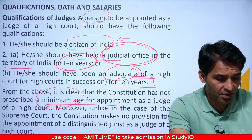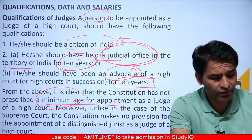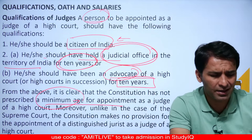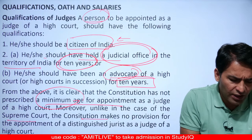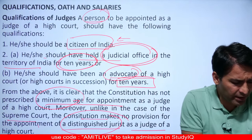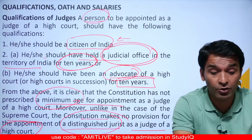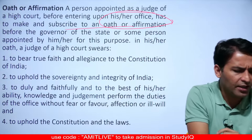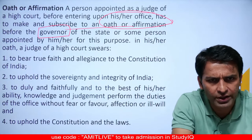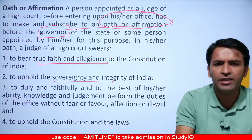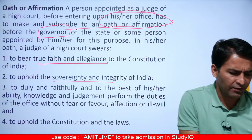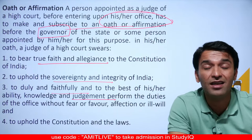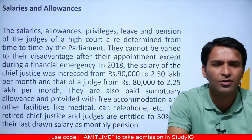Practically speaking, after completing a law degree at around 21–23 years of age and then working for 10 years, a person would be at least 35 before they could become a High Court judge. When a judge is appointed, they take an oath administered by the Governor — affirming true faith and allegiance to the Constitution, upholding the sovereignty and integrity of India, and delivering judgments faithfully to the best of their knowledge and ability, without fear, affection, or ill-will.